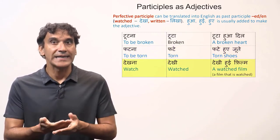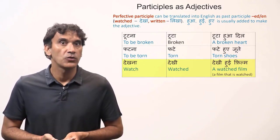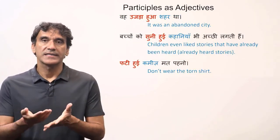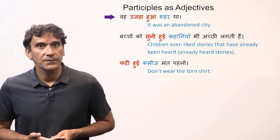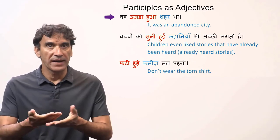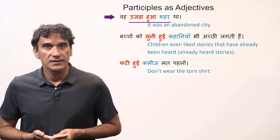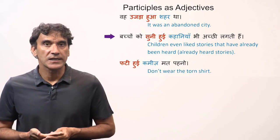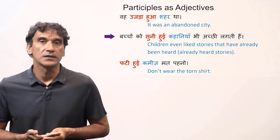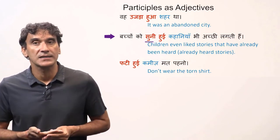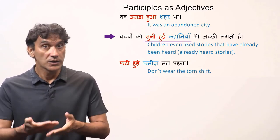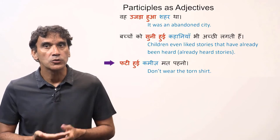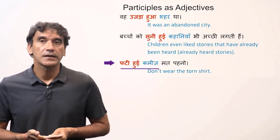'Dekhna' means 'to watch', 'dekhi' is the feminine form meaning 'watched', and 'dekhi hui film' means 'a watched film' — a film that has already been watched. Example sentences: 'Wo ujra hua shahar tha' means 'it was an abandoned city', where 'ujra hua shahar' means 'abandoned city'. 'Bachon ko suni hui kahaniyaan bhi achhi lagti hain' means 'children even like stories that have already been heard'. The participle as adjective here is 'suni', meaning 'already heard', so 'suni hui kahaniyaan' means 'already heard stories'. 'Phati hui kameez mat pahno' means 'do not wear the torn shirt'.